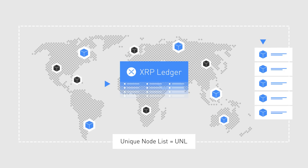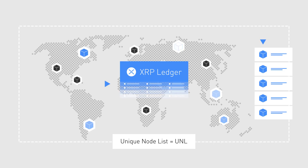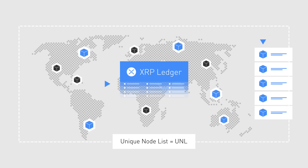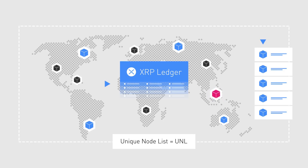You can imagine this as a large group of trusted people, and the network needs agreement from all of them to make a decision. But if one of them doesn't agree, nothing will happen until the problem is solved.